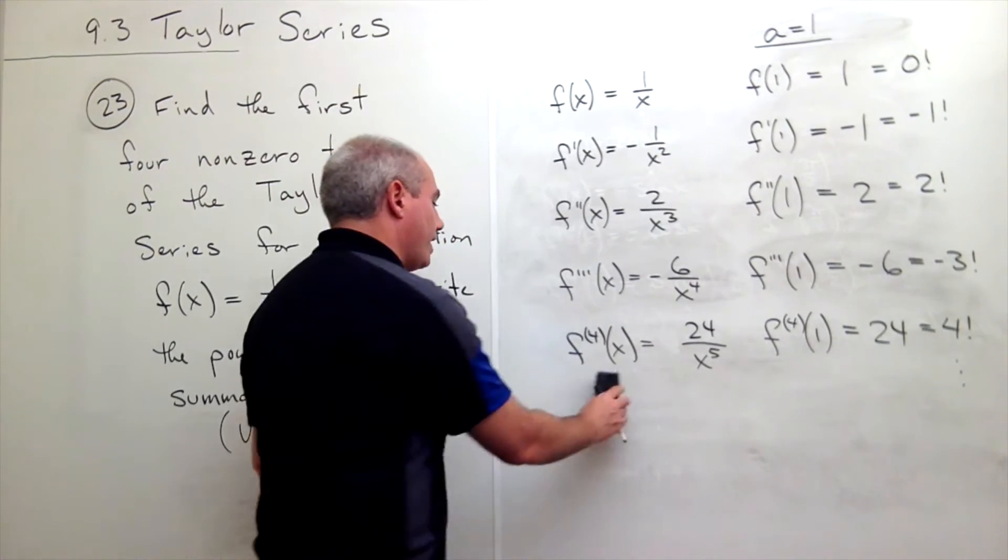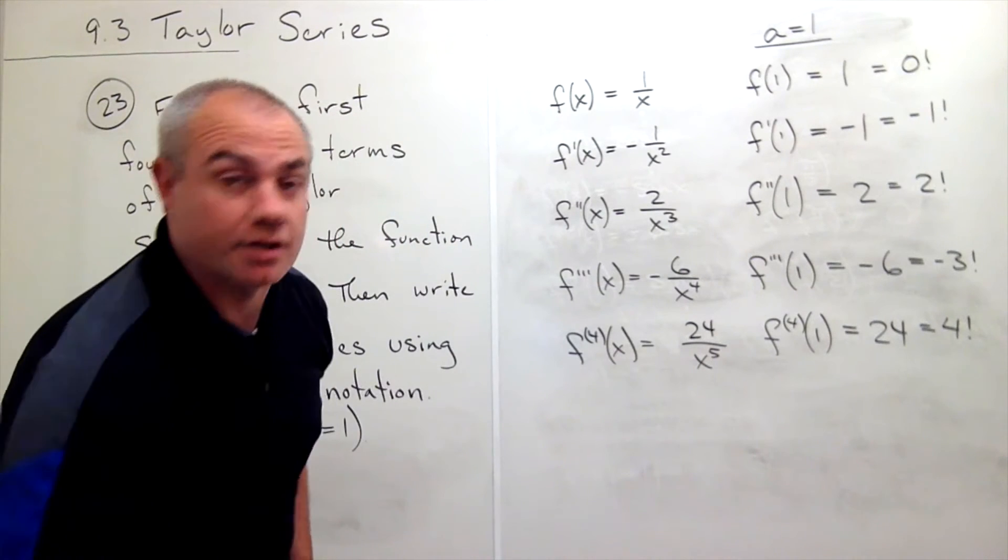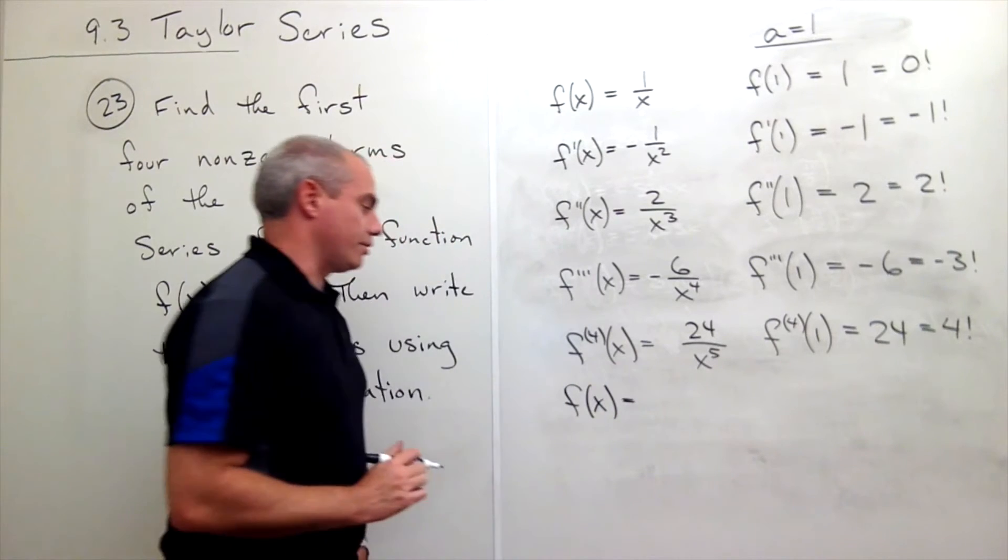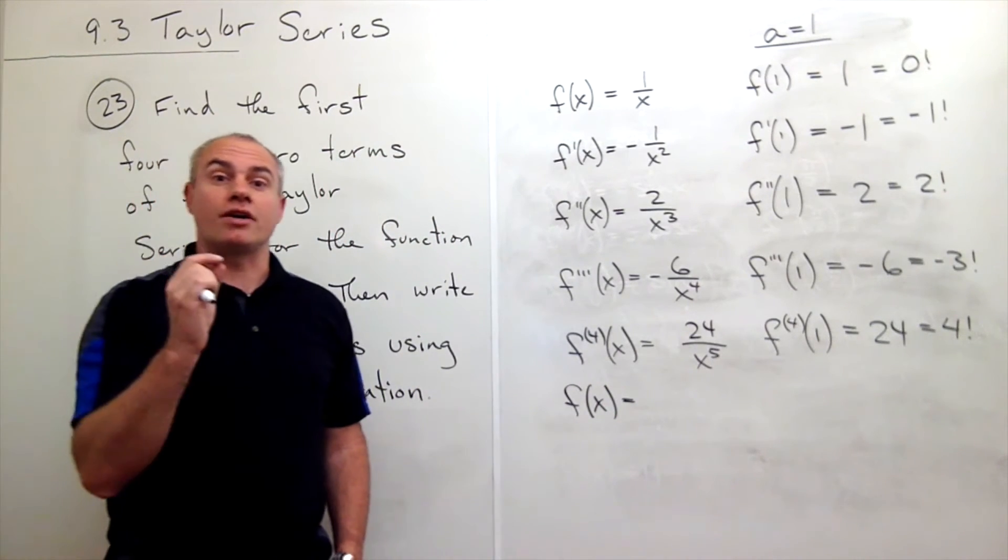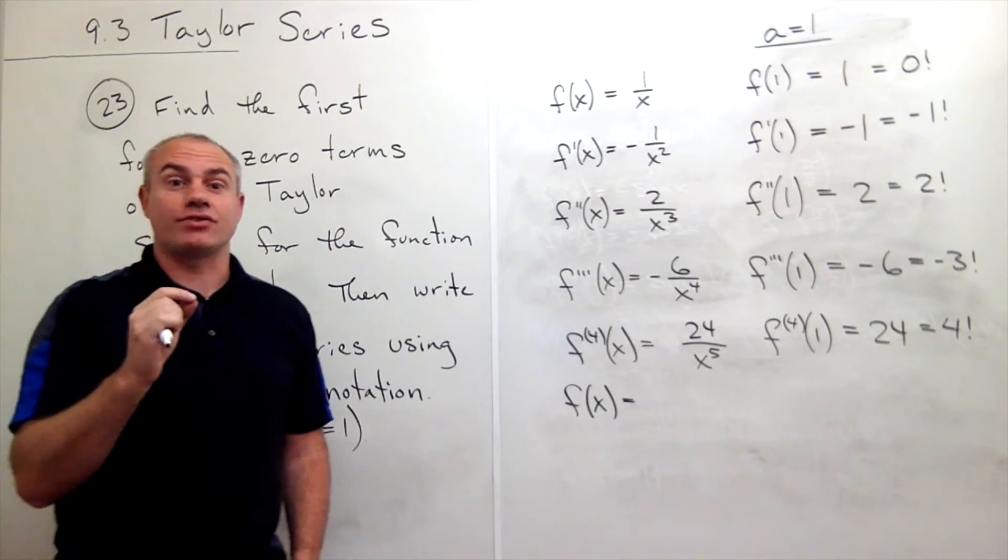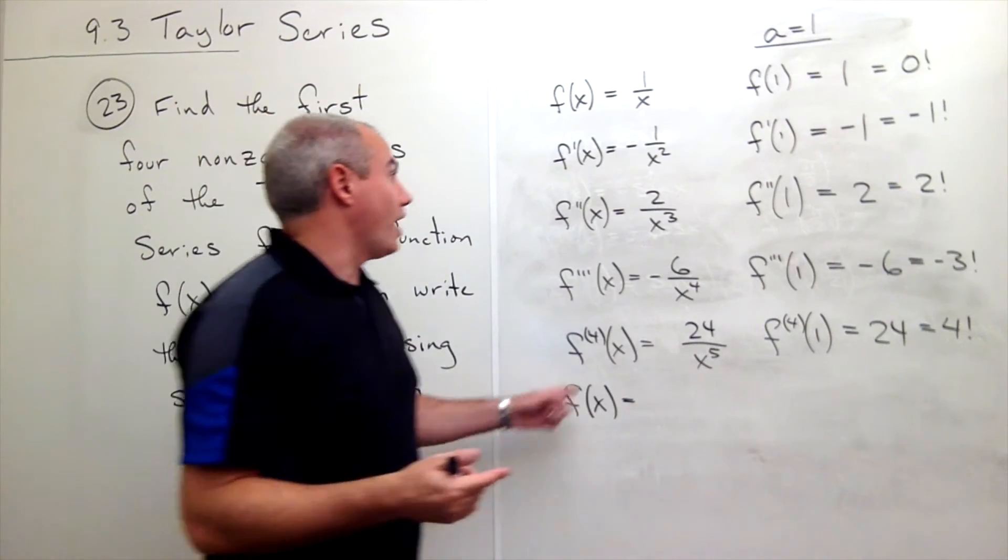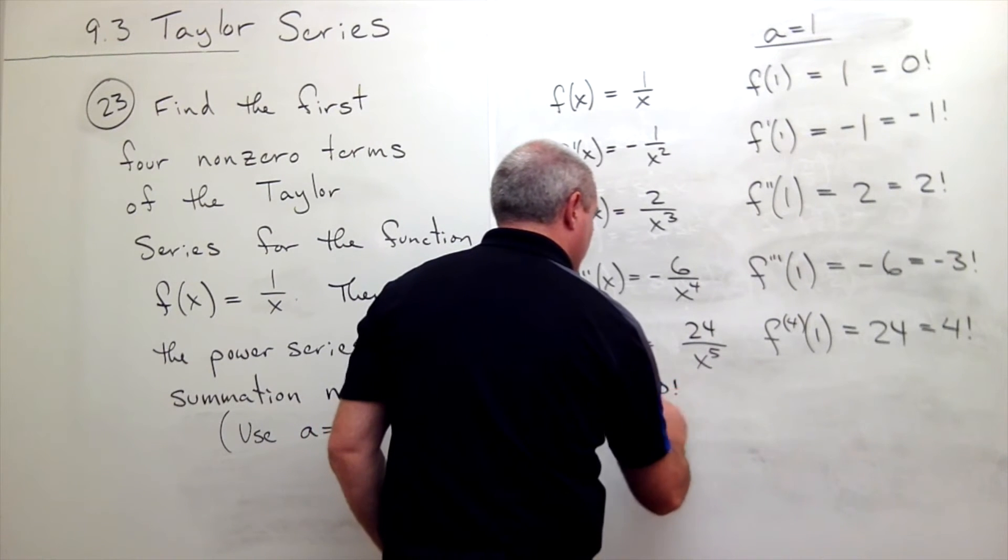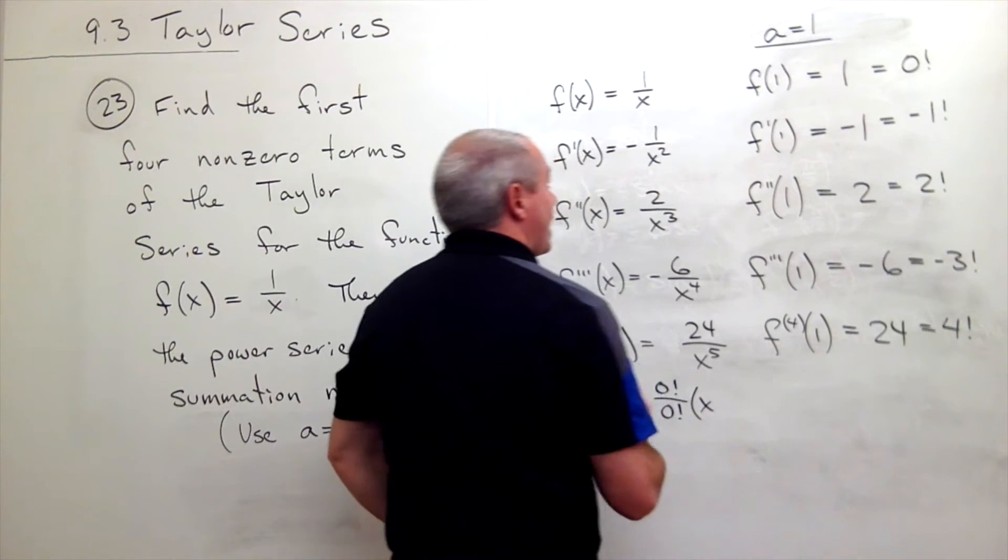Okay so what we can do now is say, alright, if I want to write this thing out as a Taylor series, then I need to do the following. f of x is going to be equal to—now we need to remember our formula for Taylor series—it starts out f of a over 0 factorial times x minus a to the 0. Well, f of a is f of 1, so that's 0 factorial divided by 0 factorial times x minus a, a being 1, to the 0, plus f prime of 1, which is negative 1 factorial, so I get minus 1 factorial divided by 1 factorial times x minus 1 to the first.